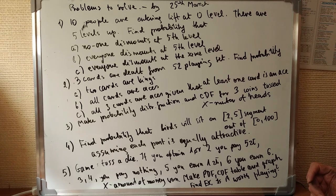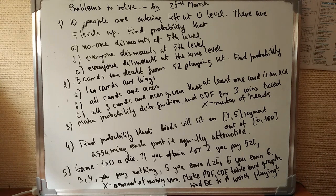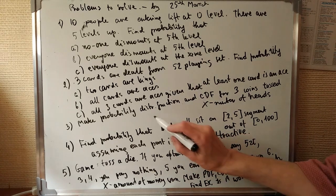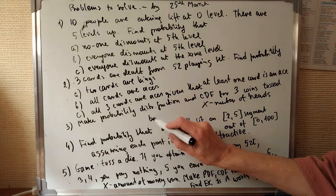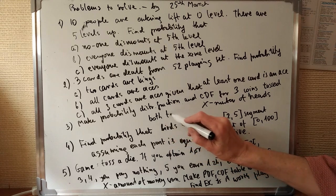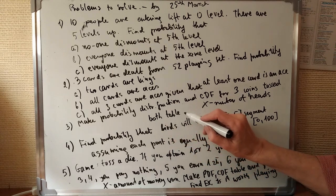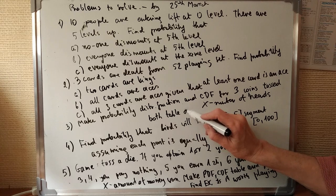Exercise three. Make probability distribution function and cumulative distribution function for three coins tossed, where X is the number of heads. And let me write both table and graph.